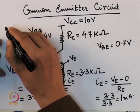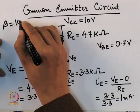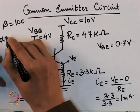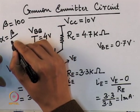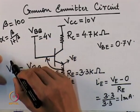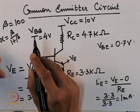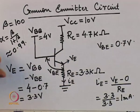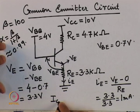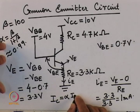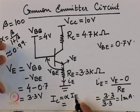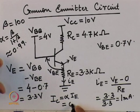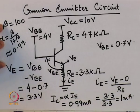Suppose we are given that beta for this circuit is equal to 100. Then alpha is given by beta / (1 + beta), and this comes out to be nearly equal to 0.99. Ic is given by alpha × Ie = 0.99 × 1 mA = 0.99 milliampere.